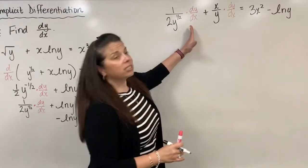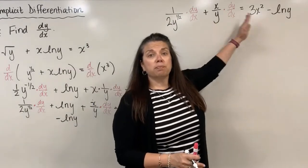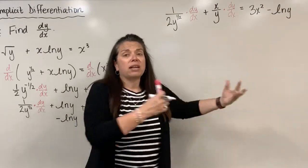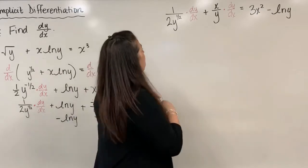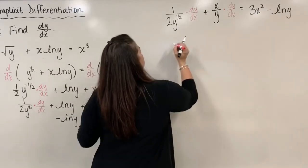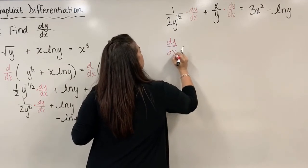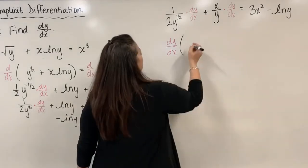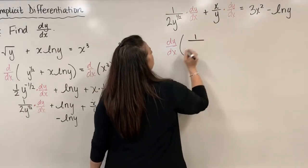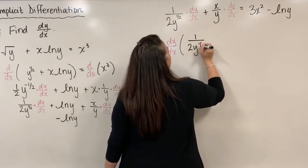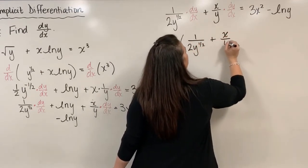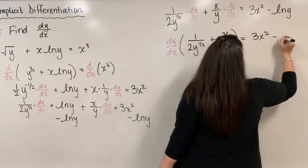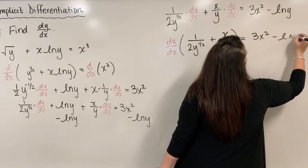Both terms on the left side contain dy/dx, so we factor it out as a greatest common factor. This gives us dy/dx times the quantity 1 divided by 2y to the one-half plus x divided by y, and the right side remains 3x squared minus natural log of y.